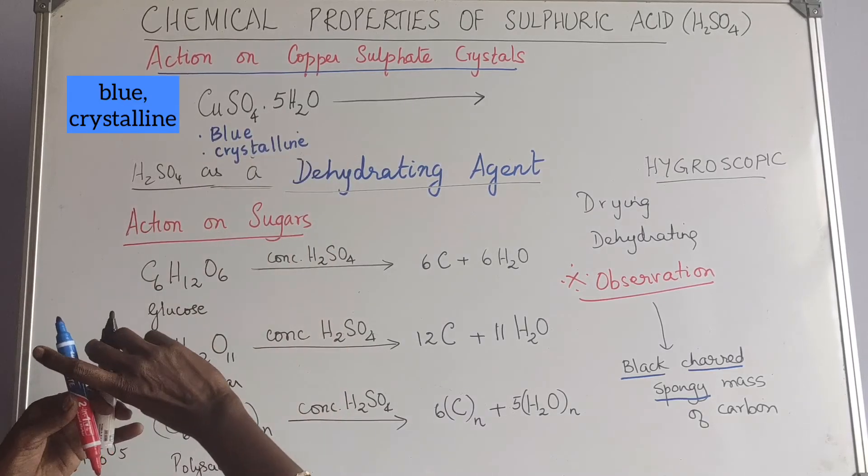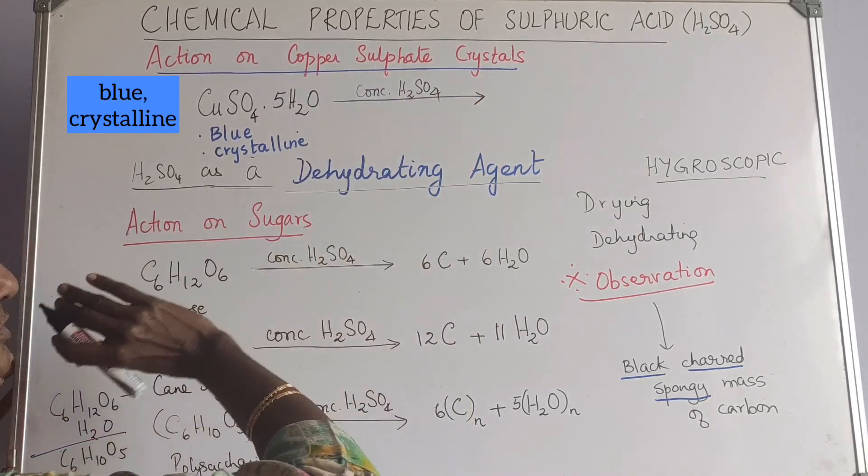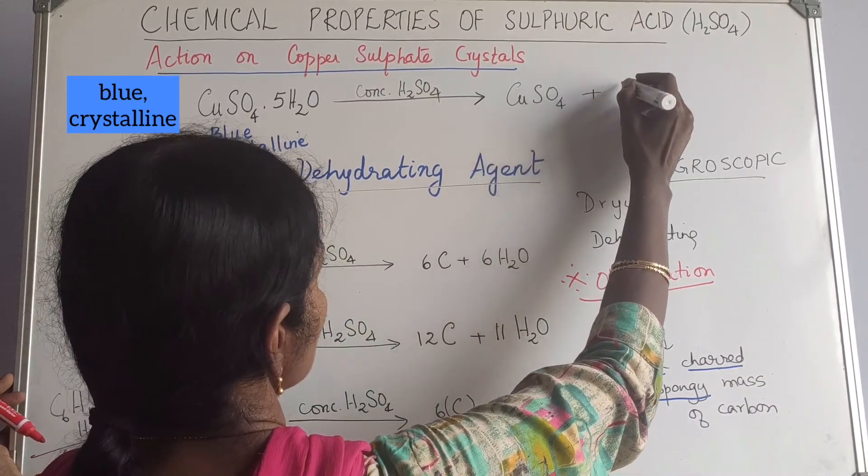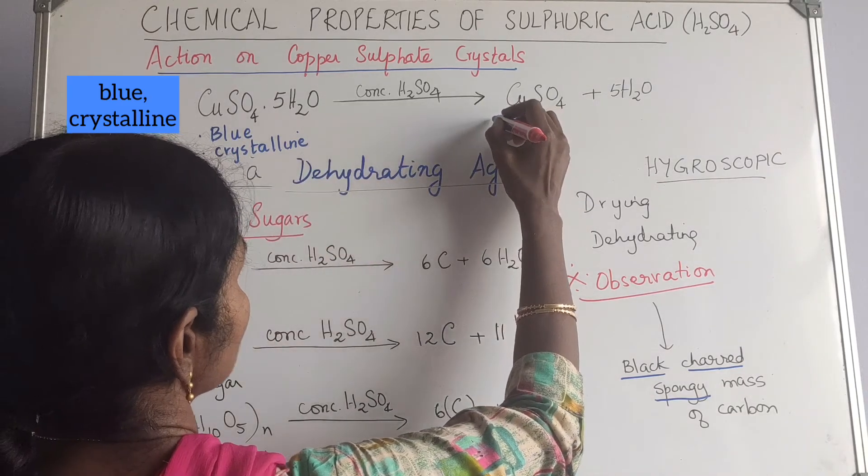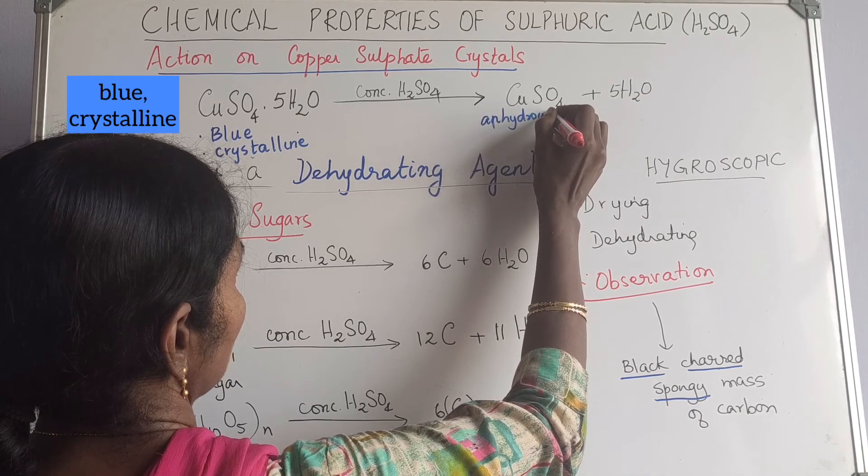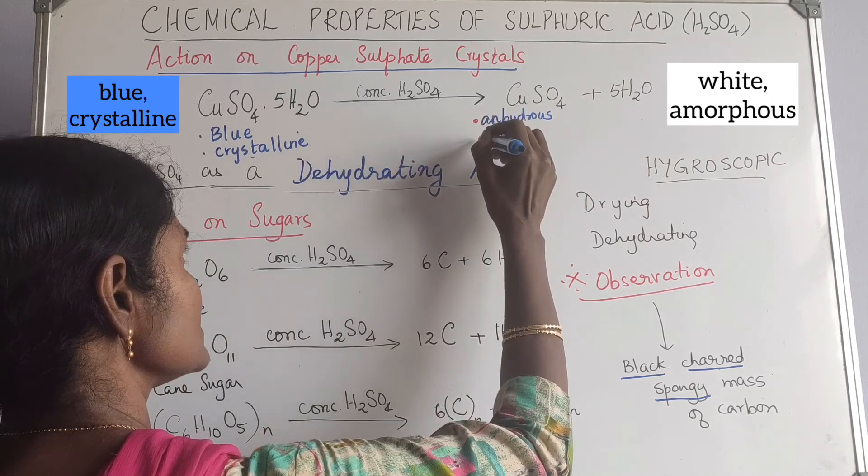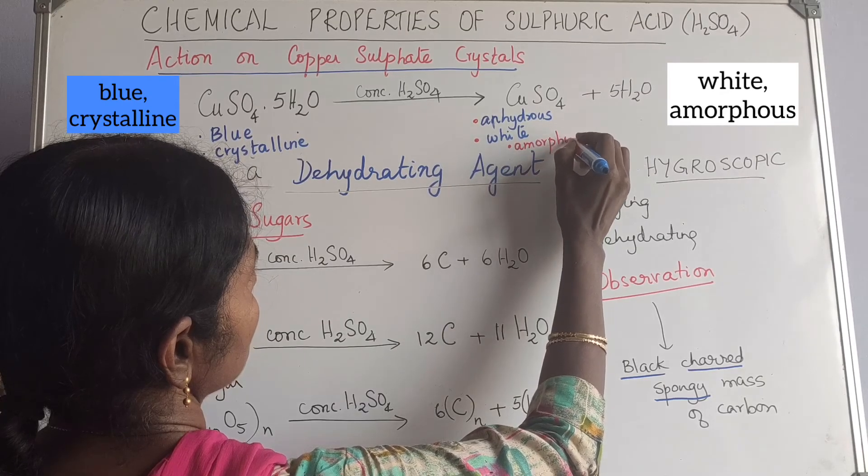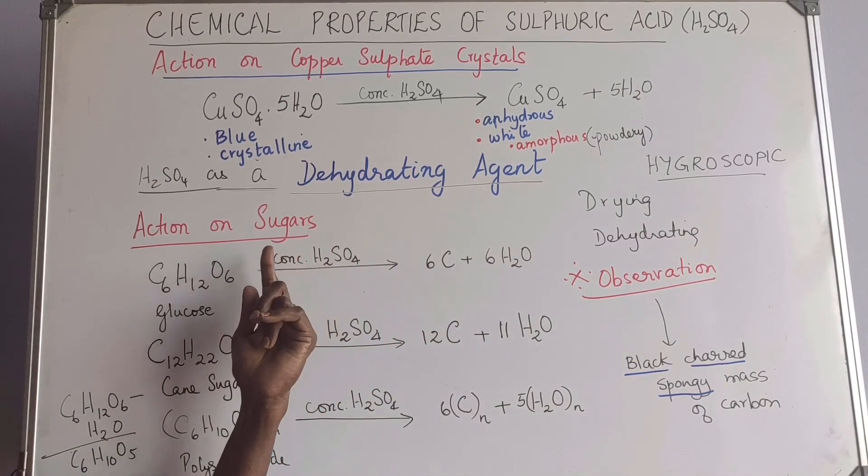Now to this, when you add concentrated sulfuric acid, it removes the molecules of water of crystallization and it converts this copper sulfate pentahydrate into anhydrous, which means there is no water. And this becomes white. So one is anhydrous, second one is white. It also becomes amorphous. Here it is crystalline, here it is amorphous.